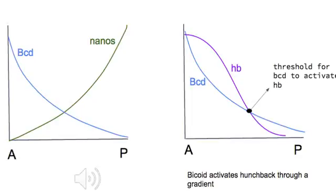In the first graph, you can see a gradient difference between Bicoid and Nanos on a posterior-anterior axis. In the second graph, hunchback is found in a higher amount near the anterior because Bicoid activates it. The amount of Bicoid must reach the threshold amount for it to activate hunchback. There is less hunchback towards the posterior end because Nanos represses it.